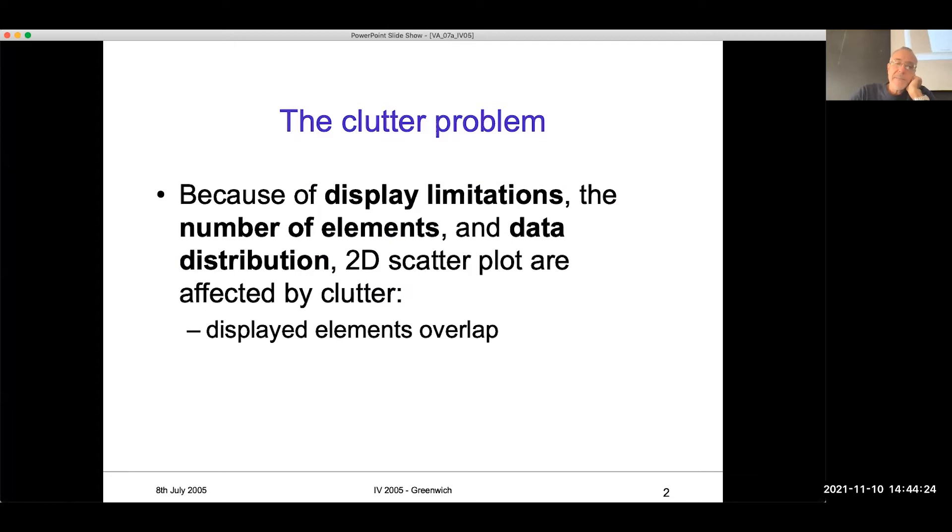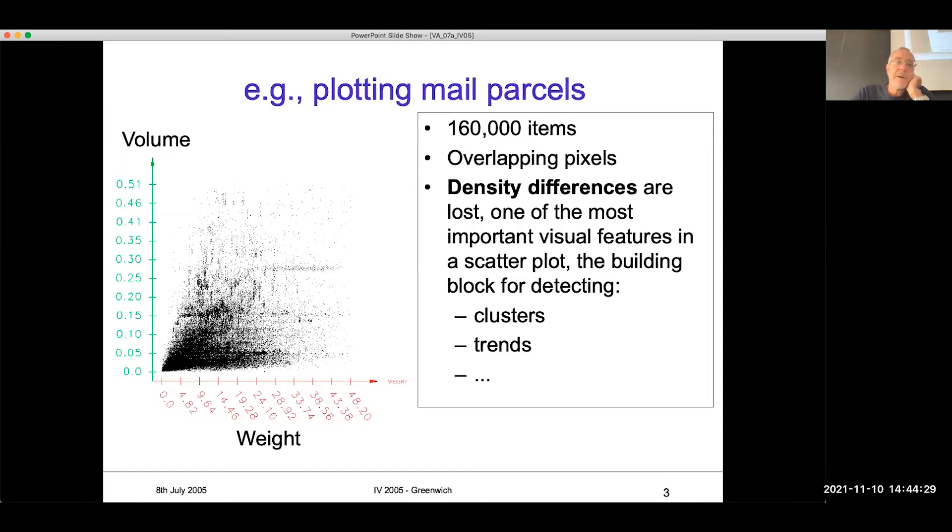I am really happy and I am using still this example about the mail parcels. To me, it's very didactical because it's easy to grasp. You are familiar with it. And here, the clustering is not making readable this part. And moreover, what about density differences? If I want to see the difference in density from here to here, it is a very sparse density. Here is higher density. But what about from here and here? You cannot perceive that. The focus here is on density differences.